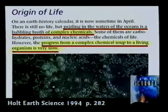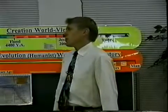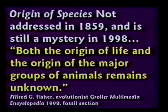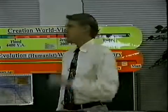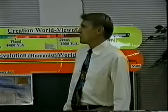This textbook says: 'Swirling in the waters of the oceans is a bubbling broth of complex chemicals — progress from a complex chemical soup to a living organism is very slow.' But it never happens at all. One encyclopedia author said: 'The origin of species, not addressed in 1859, is still a mystery in 1998. Both the origin of life and the origin of major groups of animals remains unknown.' What Miller did was take glass tubes and flasks, circulate gases, and produce a spark to simulate lightning.